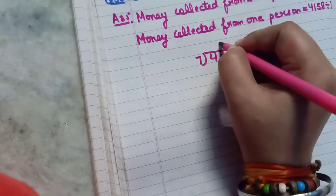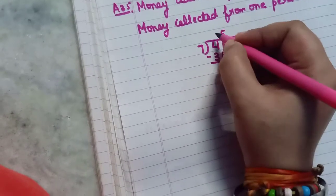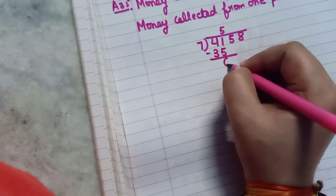7 fives are 35. So what will come? 41 becomes 3 and this becomes 11. 11 minus 5 will be equal to 6.